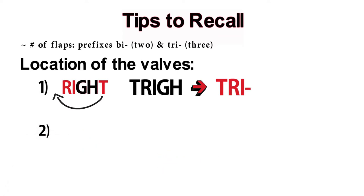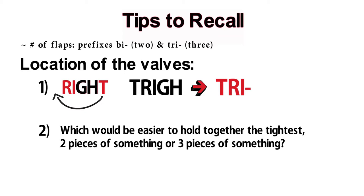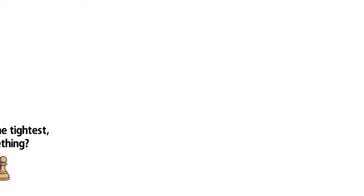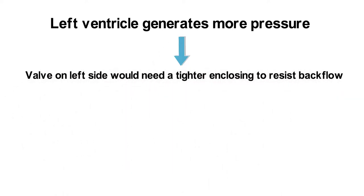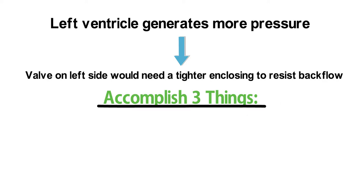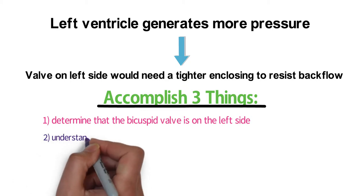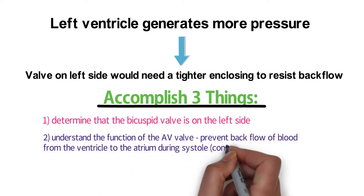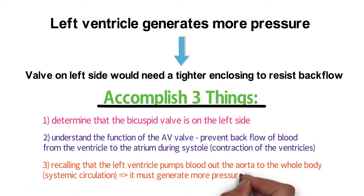Another way to remember the location is by answering this question: which would be easier to hold together the tightest — two pieces of something or three pieces? The answer would be two pieces. Since the left ventricle generates more pressure, the valve on the left side would need a tighter enclosing to resist backflow. This approach gives multiple recalls: number one, the bicuspid valve is on the left side; number two, the AV valve functions to prevent backflow from the ventricle to the atrium during systole; and number three, the left ventricle pumps blood out the aorta to the systemic circulation, which is why it must generate more pressure.